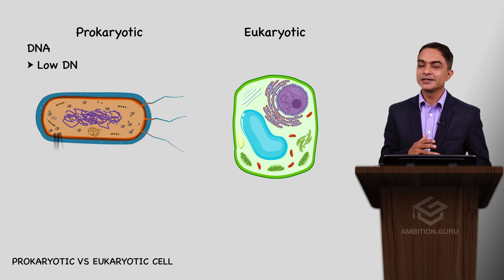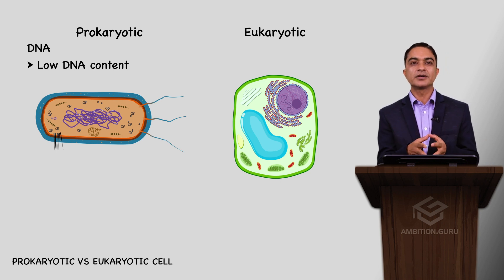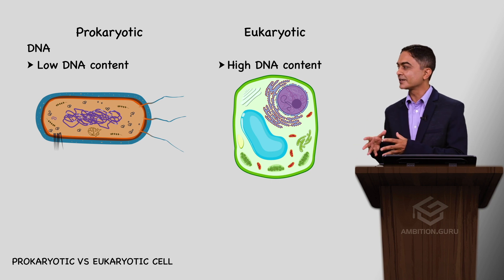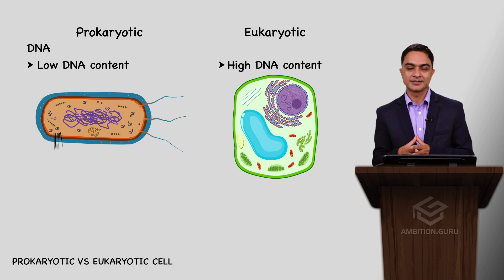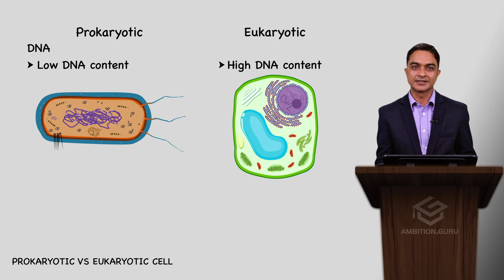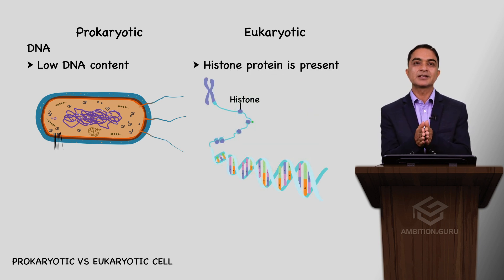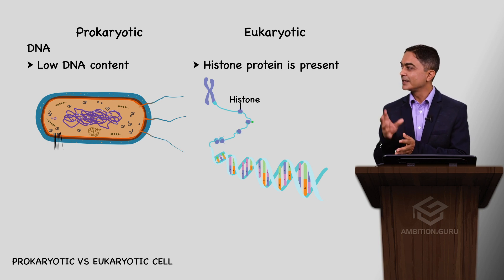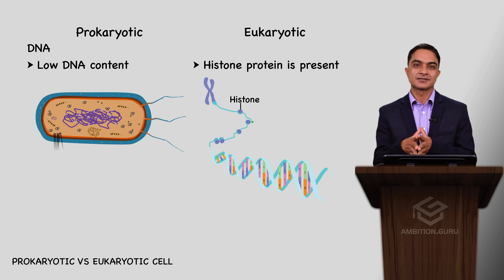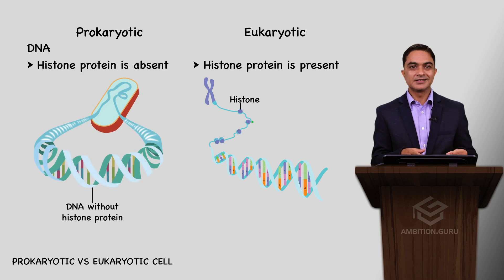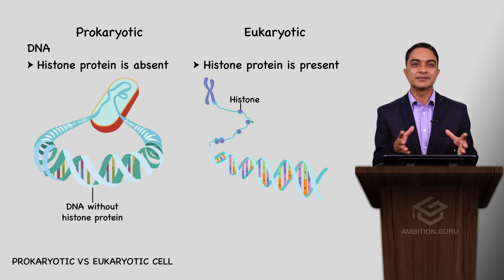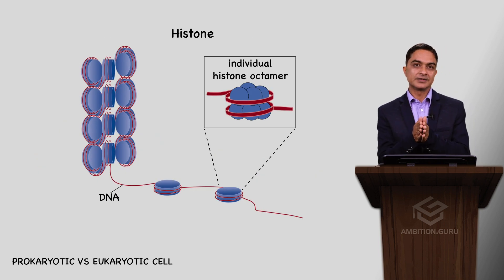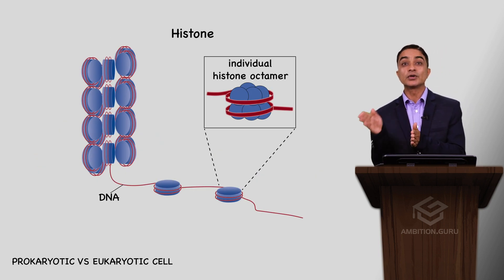DNA content is low in prokaryotic cells. In eukaryotic cells, DNA content is high — the total amount is high. DNA is always associated with histone proteins in eukaryotic cells. Eukaryotic cells have histone proteins present.